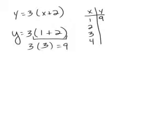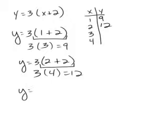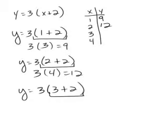And then for x equals 2, following order of operations: 2 plus 2 is 4, times 3 equals 12. Going on, this time I'm going to put 3 in for x. 3 plus 2 is 5, times 3 is 15.